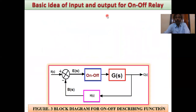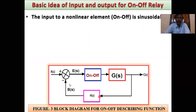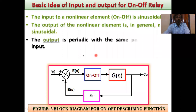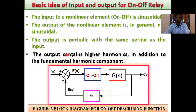Basic idea of input and output for On-Off relay: This is the basic block diagram for the On-Off circuit, showing the On-Off relay and filter circuit, with a feedback element where R is always sinusoidal. Therefore, the input to the non-linear element is always sinusoidal. The output of the non-linear element is in general not sinusoidal — the output of the On-Off relay is not sinusoidal. The output is periodic with the same period as the input, and it contains higher harmonics in addition to the fundamental harmonic component.